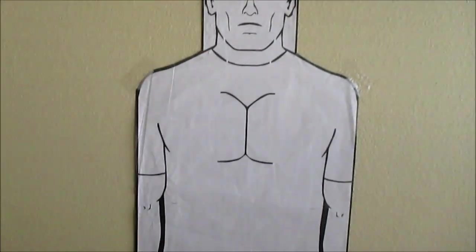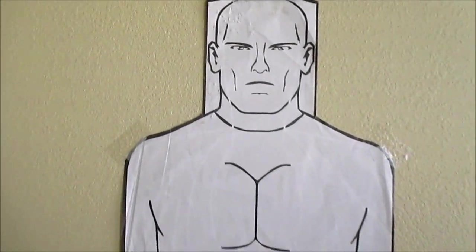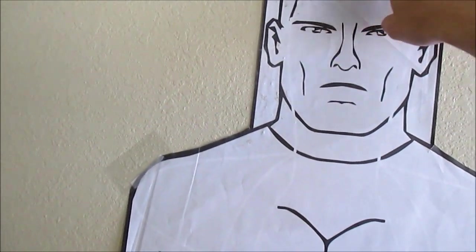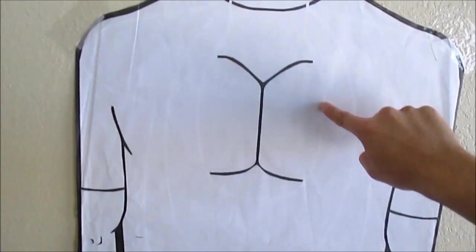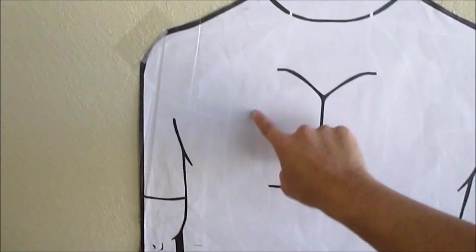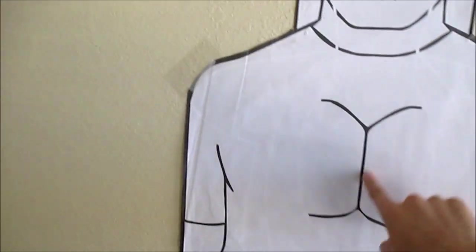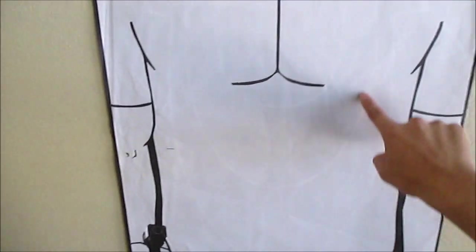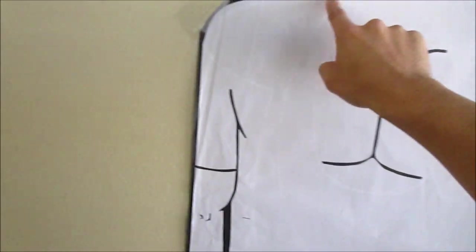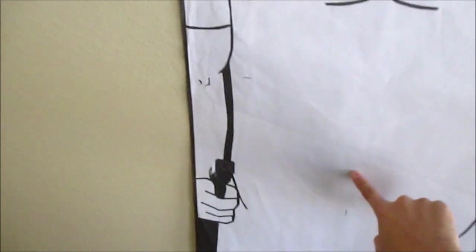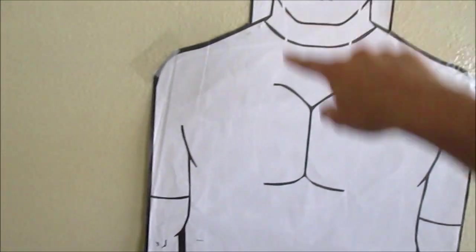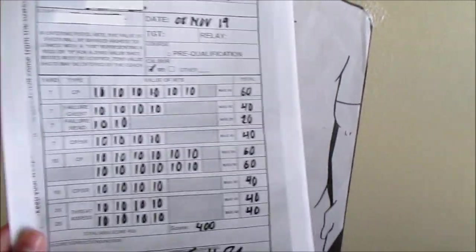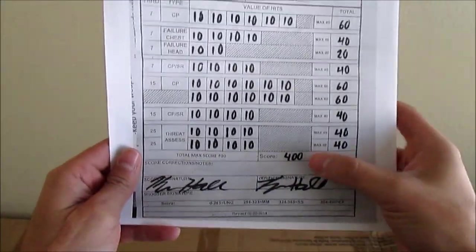I have the target here and I can show you there's a bowling pin shape. So it goes from here, goes up, around, and then around the chest. And this whole bowling pin shape is 10 points. Outside of that right here is 8 points. Outside of that here is 6. And then anywhere else on the body is 4 points. So when I did my qualification I was able to get a perfect score, 400 points.